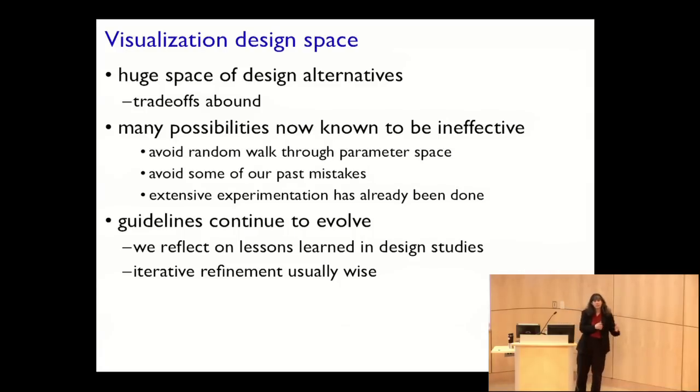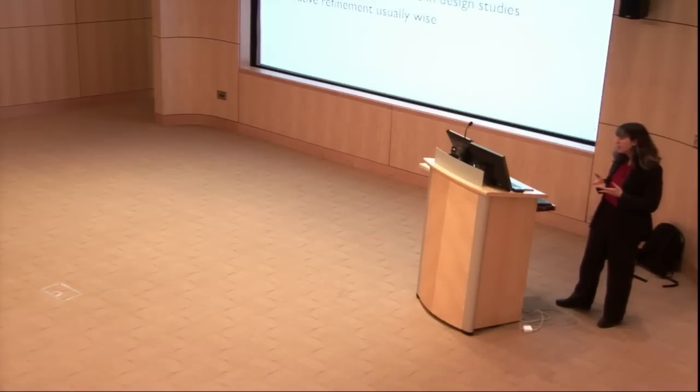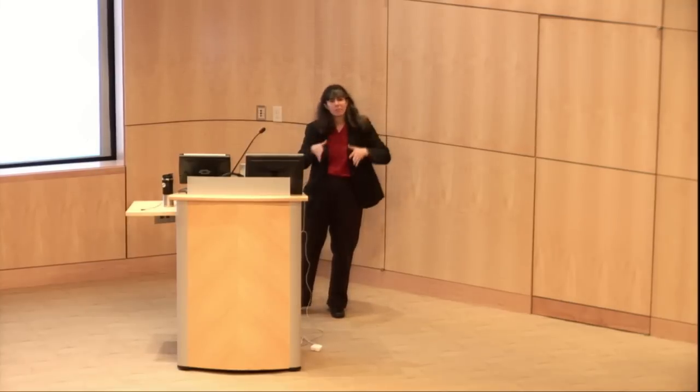These guidelines are not set in stone — they continue to evolve. We do design studies where we explain the problem we're trying to solve and discuss whether our proposed solution actually nailed it. Even for people aware of the currently known trade-offs, there is still a lot of refining to do. It's rare to completely nail it on the first try; usually we do iterative refinement — build a system, watch people use it, and then make the system better rather than blaming the user.